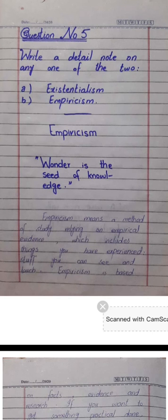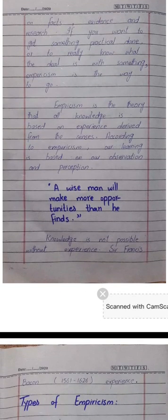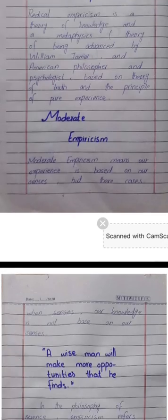Last fifth question: Write a detailed note on any one of the two — existentialism and empiricism. Aapko do topics diye gaye hain, in mein se kisi ek par likhna hai. Maine empiricism choose kiya kyunke yeh ek bahut important topic hai. Empiricism ki teen types hain: classical, radical, and moderate — aur yeh sari yahan bayan ki gayi hain.